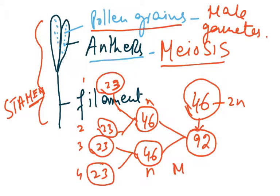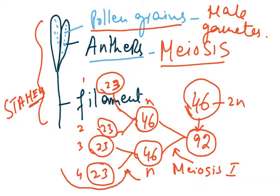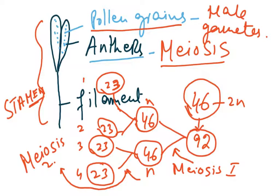This is going to be meiosis 1, and this is going to be meiosis 2. Please pause this video and try to understand the concept which I'm trying to make. So meiosis is going to result in 4 cells with half the number of chromosomes.